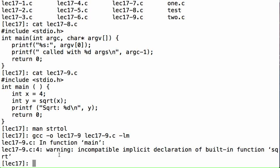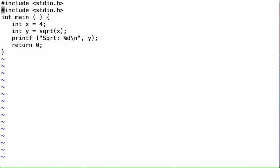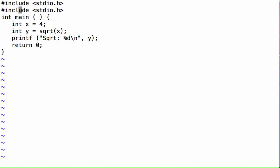You can disregard that, it'll work. You can execute lec17-9 and it prints out square root of 4 is 2, so everything worked. So despite the warning, I'm guessing this is fine.